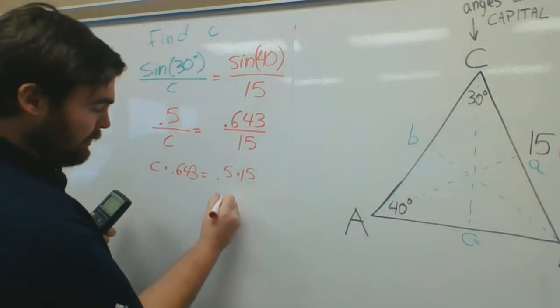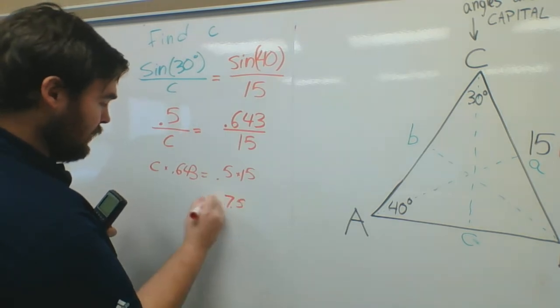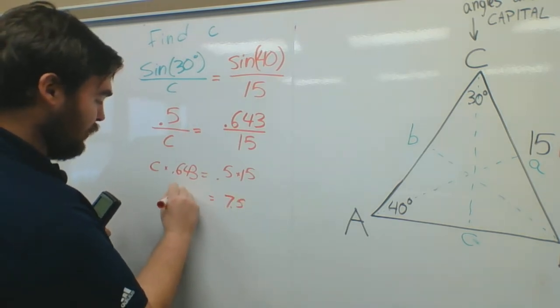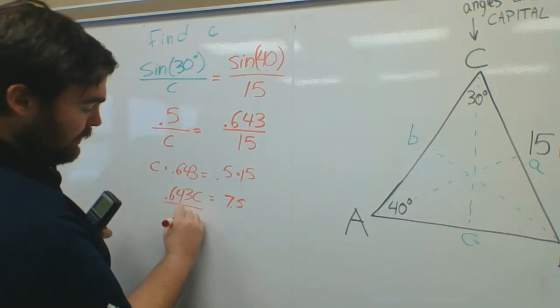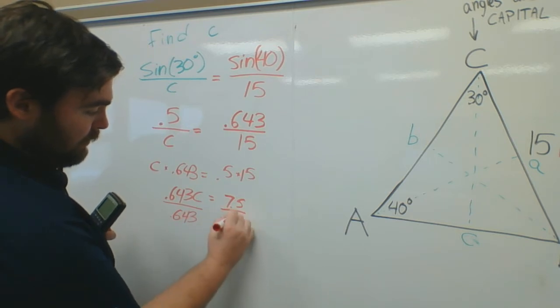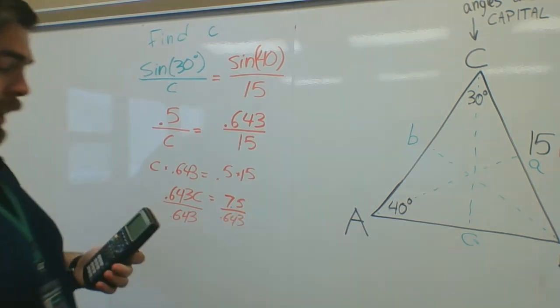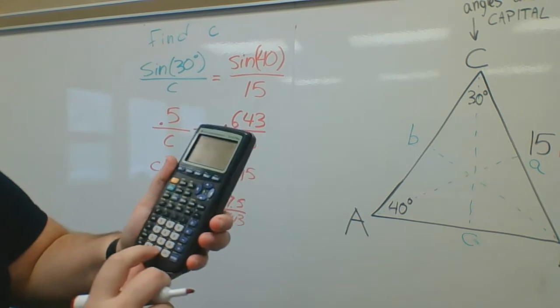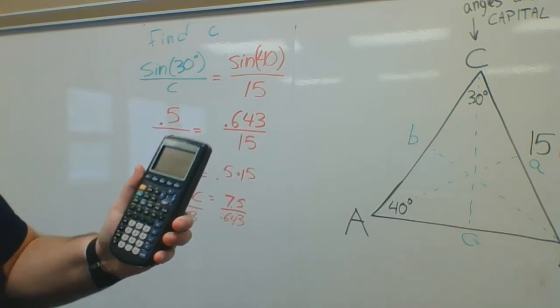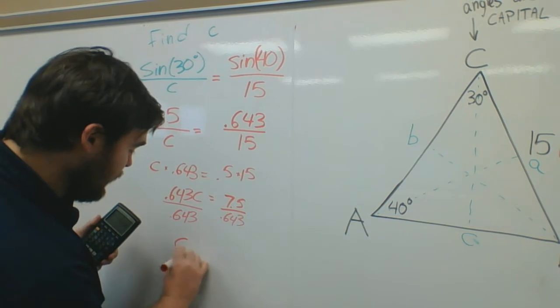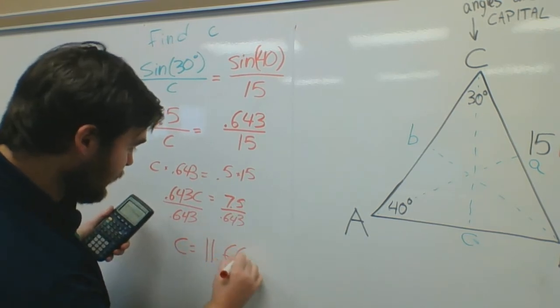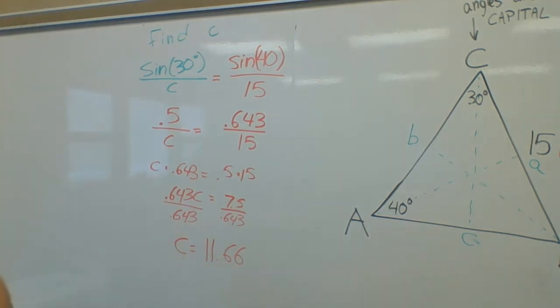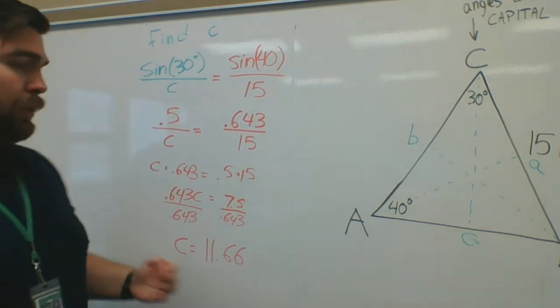So I'm going to go through this. 0.5 times 15 is going to be 7.5. So I'll have 7.5 over here. So it'll be 0.643 C. And then you get C by itself. So I'll divide both sides by 0.643. So 7.5 divided by 0.643 is going to be C is equal to 11.66.